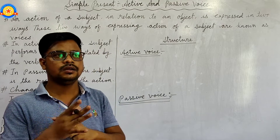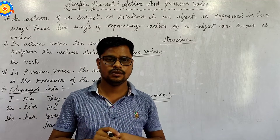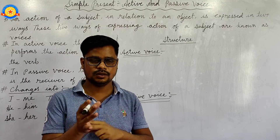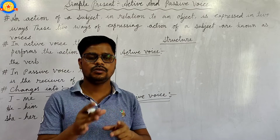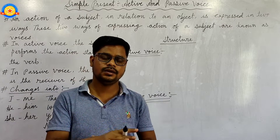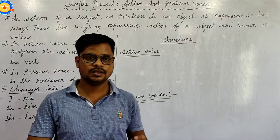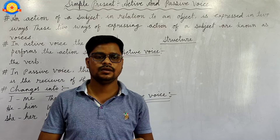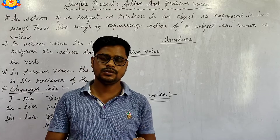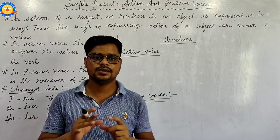There are three tenses and each tense has four parts, so there are a total of 12 parts of tense. Out of 12, we can convert the passive voice of only 8 tenses: simple present, present continuous, present perfect, simple past, past continuous, past perfect, simple future, and future perfect. These are the 8 tenses that we can change into passive voice.